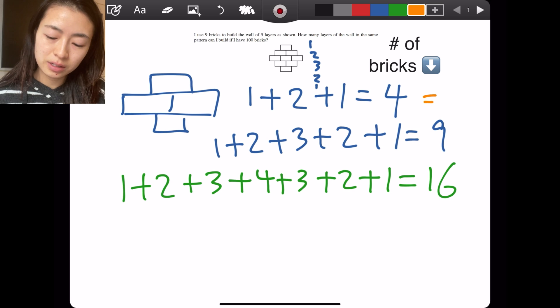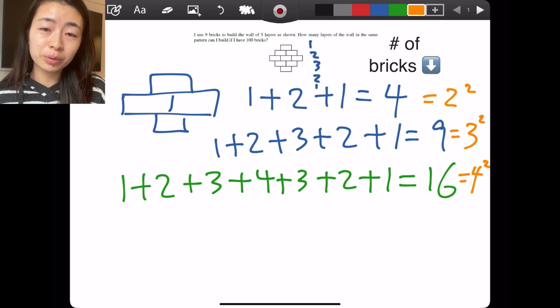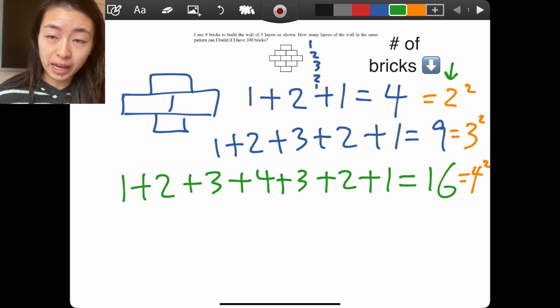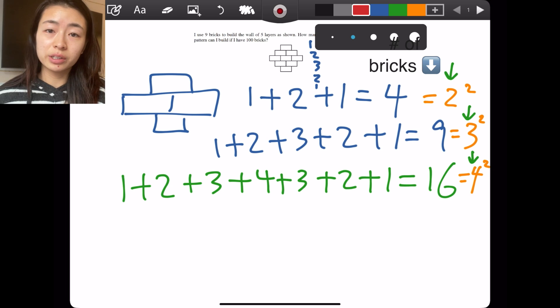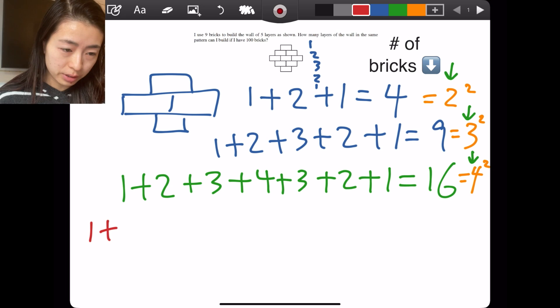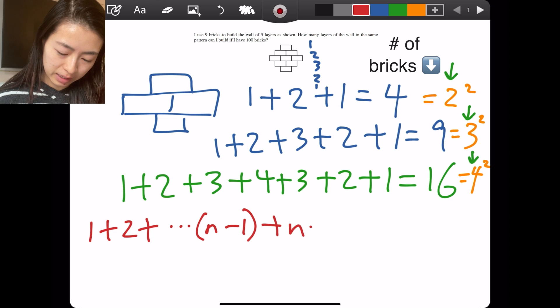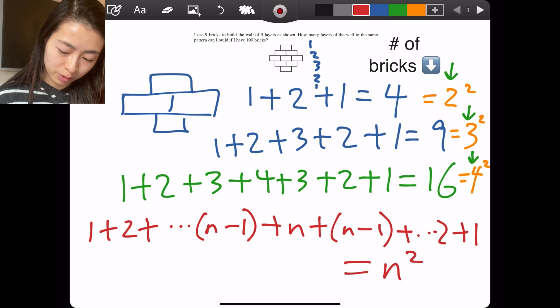This first number is 2 squared, this one is 3 squared, and then we got 4 squared. We can pretty confidently say that this is the pattern. So in general, for n where here the n is two, the n is three, and the n is four, we will have an equation: 1 + 2 + n - 1 + n + n - 1 all the way down to 2 + 1 = n².